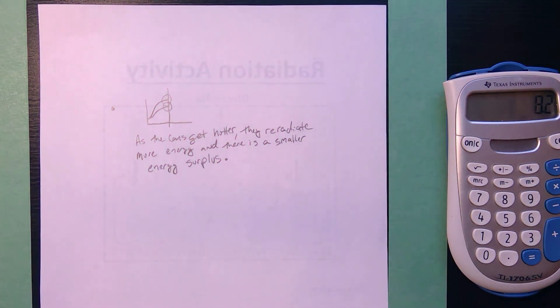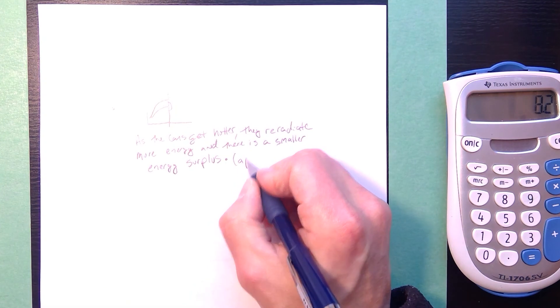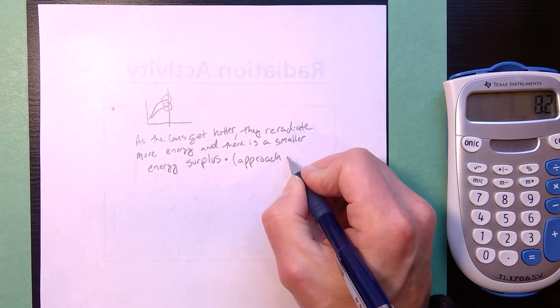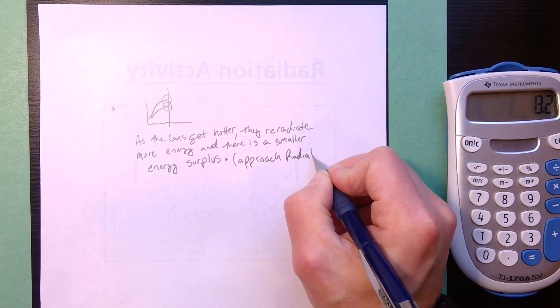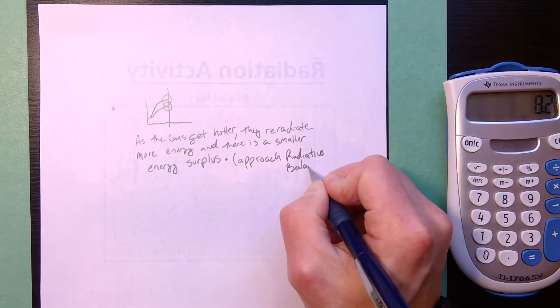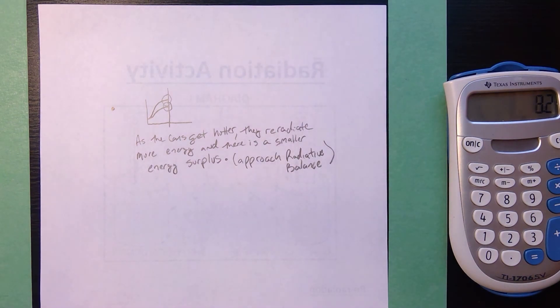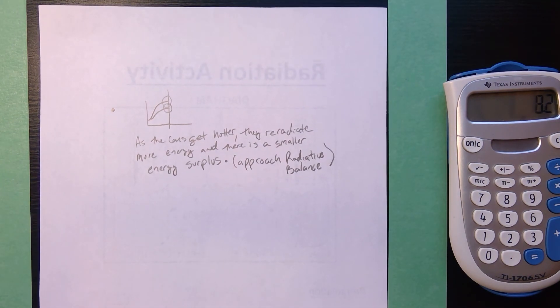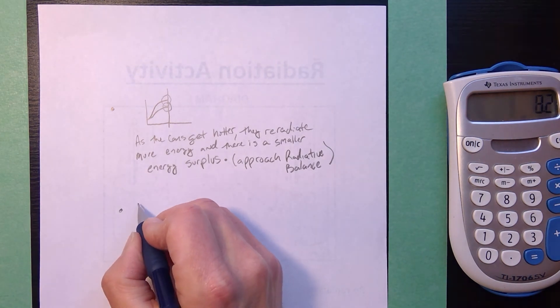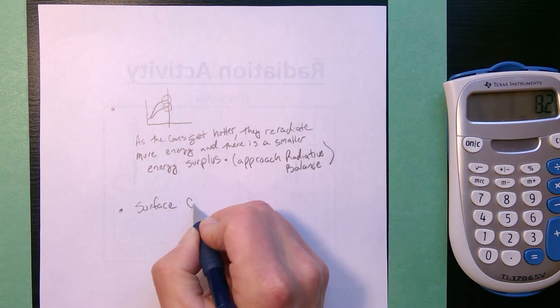And there is a smaller energy surplus they're taking in energy at the same rate but they're releasing energy at a greater rate. You could say that's what's happening is they approach radiative balance. If we left it running long enough and we'll probably do this in class you could get to a state where the temperature of both cans stays constant even though they're being heated by the light bulbs.